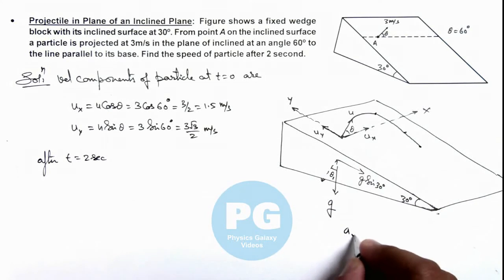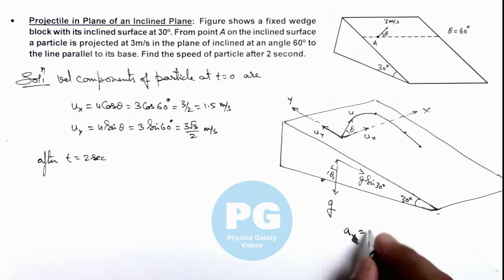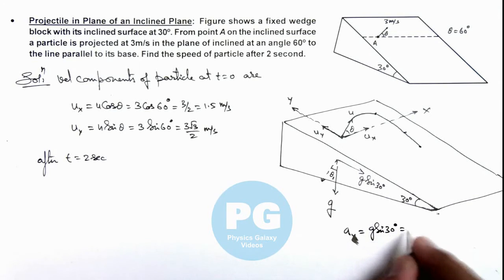Acceleration in y direction of particle is along negative y side, this is g sine 30 degrees that is equal to g by 2, this can be taken as 5 meters per second square, which is with negative sign because it is along minus y axis. And acceleration in x direction here is zero.